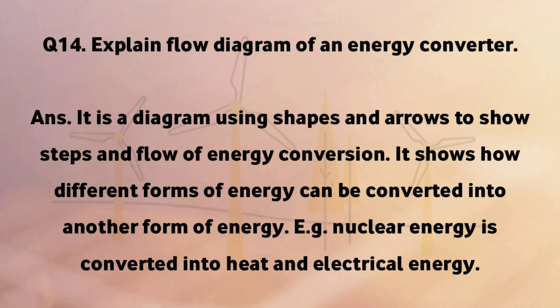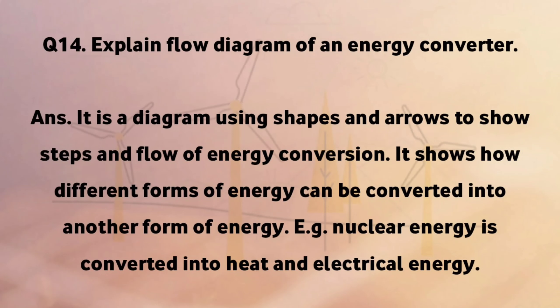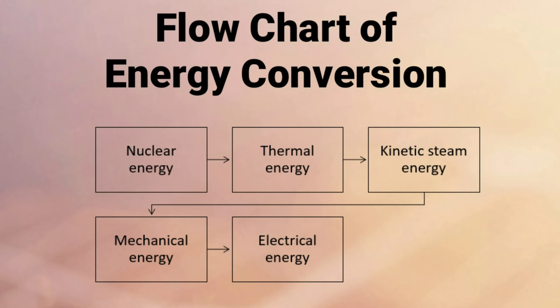Explain the flow diagram of an energy converter. It is a diagram using shapes and arrows to show steps and flow of energy conversion. It shows how different forms of energy can be converted into another form of energy. Example: nuclear energy is converted into heat and electrical energy.